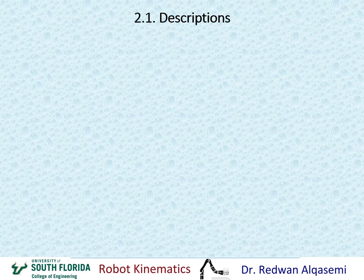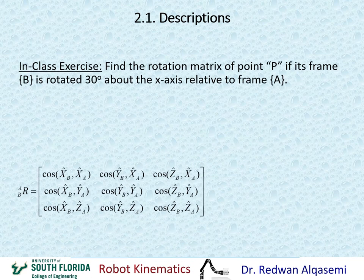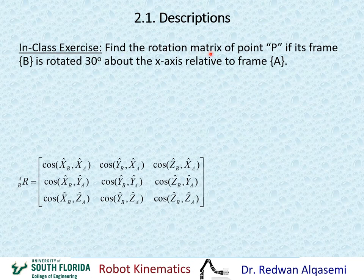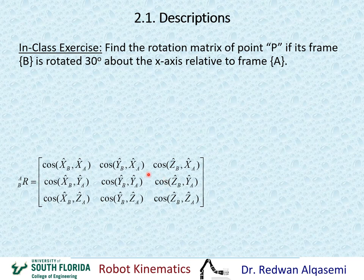Now let's take an in-class exercise. Find the rotation matrix of point P if its frame B is rotated 30 degrees about the X-axis relative to frame A. Use the direction cosines reference provided, draw the diagram, and find the rotation matrix. Pause the video, work on this on your own, then resume to see the answer.